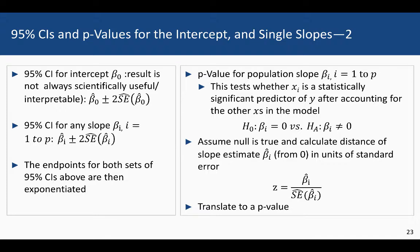The 95% confidence interval for any slope beta_i, where i runs from 1 to p and p is the number of x's, is the slope estimate plus or minus two estimated standard errors — the standard error coming from the computer. The endpoints for both confidence intervals are then exponentiated: for the intercept, to get results on the incidence rate scale; for the slopes, to get results on the incidence rate ratio scale.